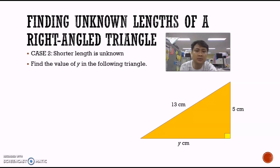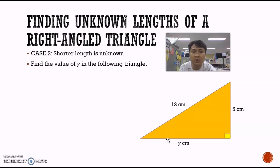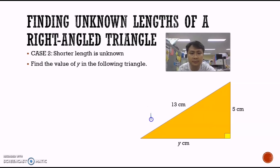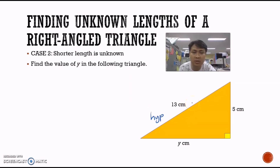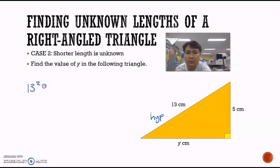Let's take a look at another example where the shorter length is unknown. The method is the same. First, we identify the hypotenuse — this length is facing the 90 degree, so we label it as the hypotenuse. To apply the formula, we start with the hypotenuse: 13 squared is equal to y squared plus 5 squared.